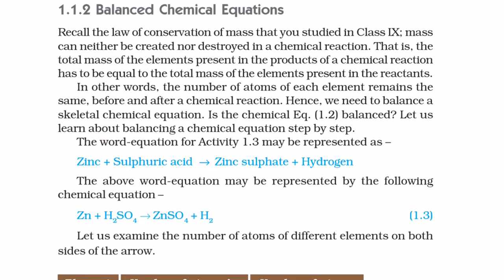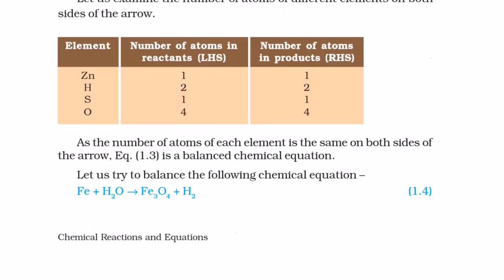Let us learn about balancing a chemical equation step by step. The word equation for activity 1.3 may be represented as zinc plus sulfuric acid gives zinc sulfate plus hydrogen. The above word equation may be represented by the following chemical equation: Zn plus H2SO4 gives ZnSO4 plus H2. Let us examine the number of atoms of different elements on both sides of the arrow. As the number of atoms of each element is the same on both sides of the arrow, equation 1.3 is a balanced chemical equation.